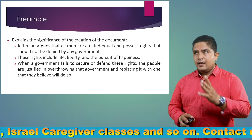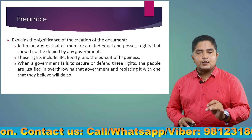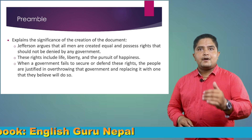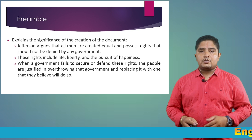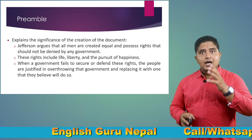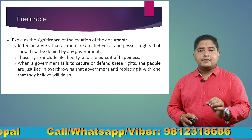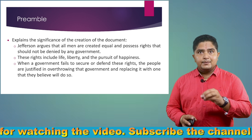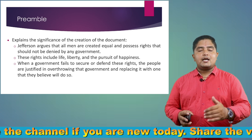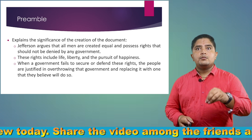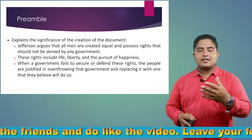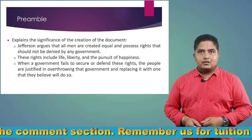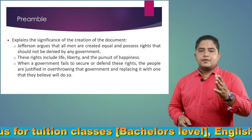Jefferson argued that all humans possess three fundamental rights: Life, Liberty, and the Pursuit of Happiness. He argued that if any government cannot provide these three rights to its people, it is the legitimate right of the people to overthrow such a government and form a new one in whom they believe. The people are not compelled to tolerate torture or oppression. The British government had committed a long list of abuses against the colonists.